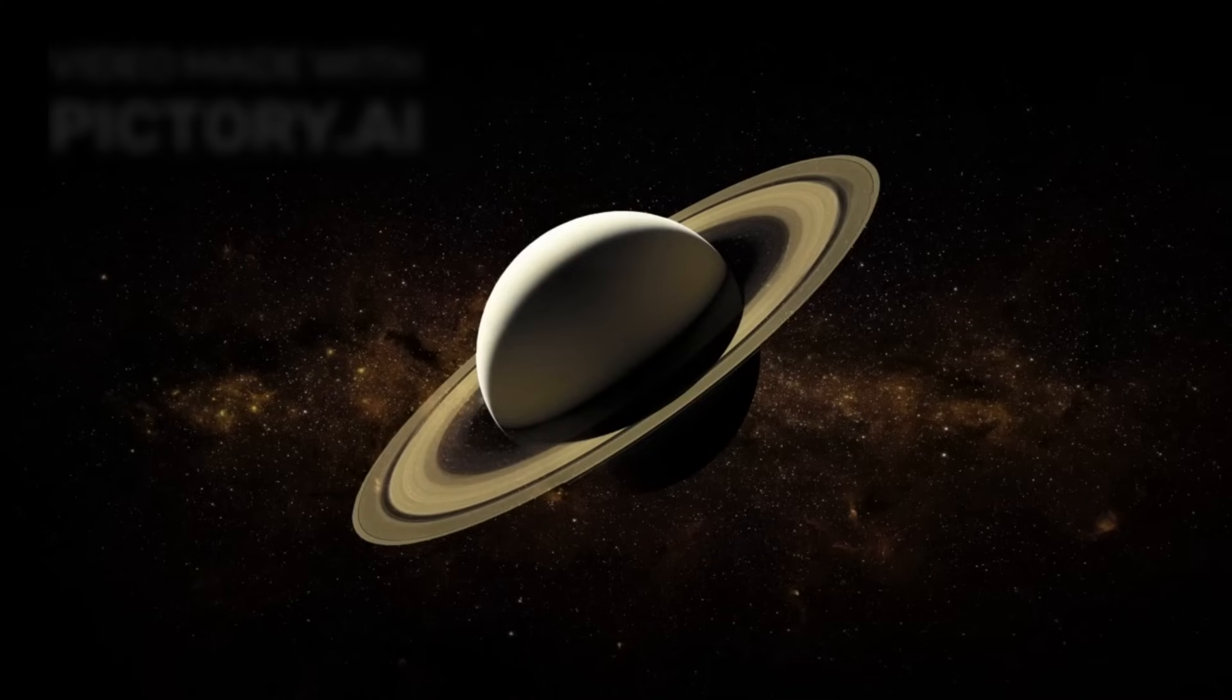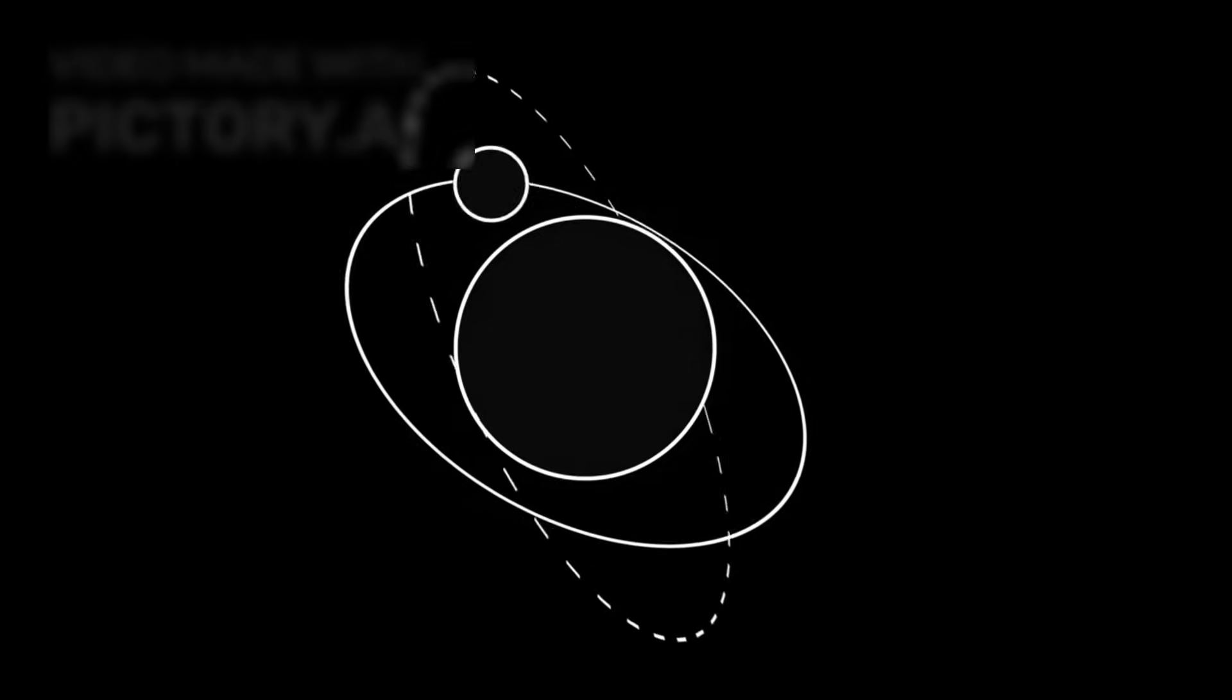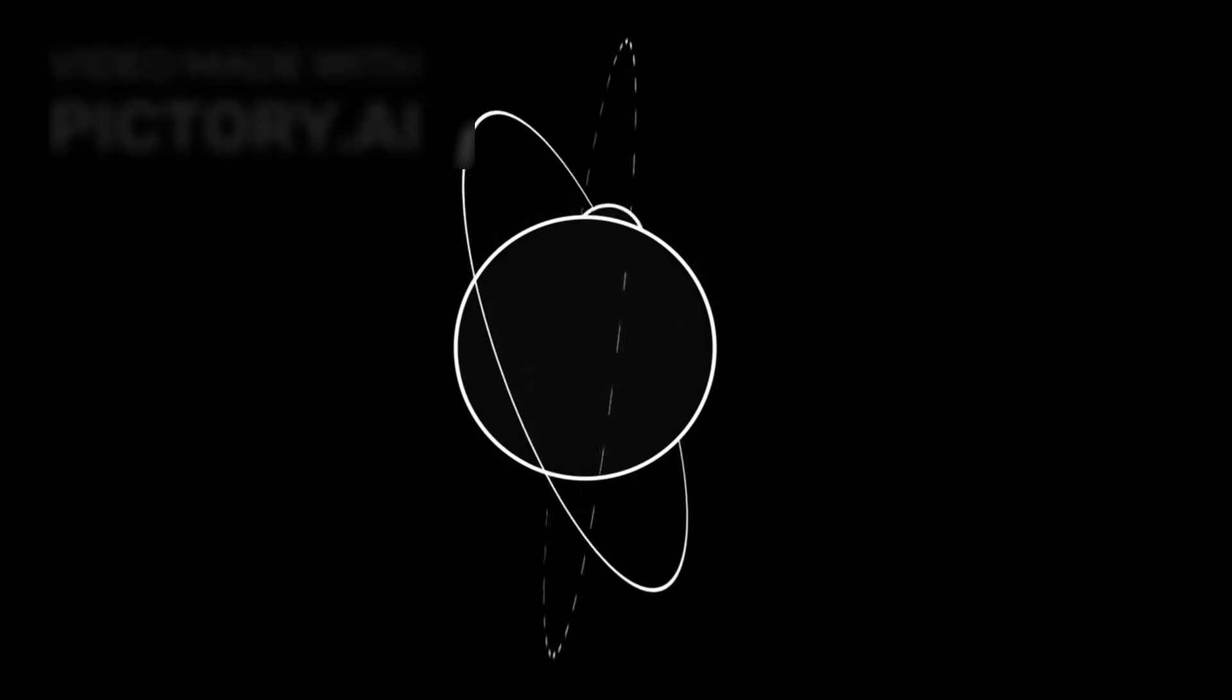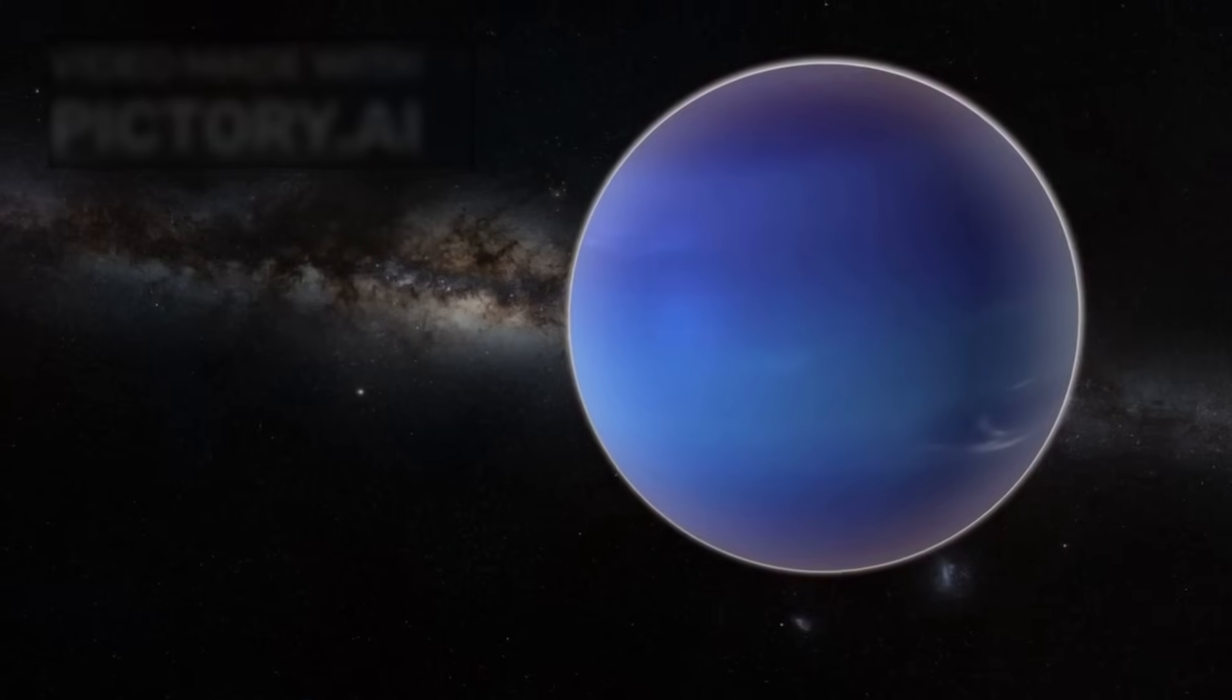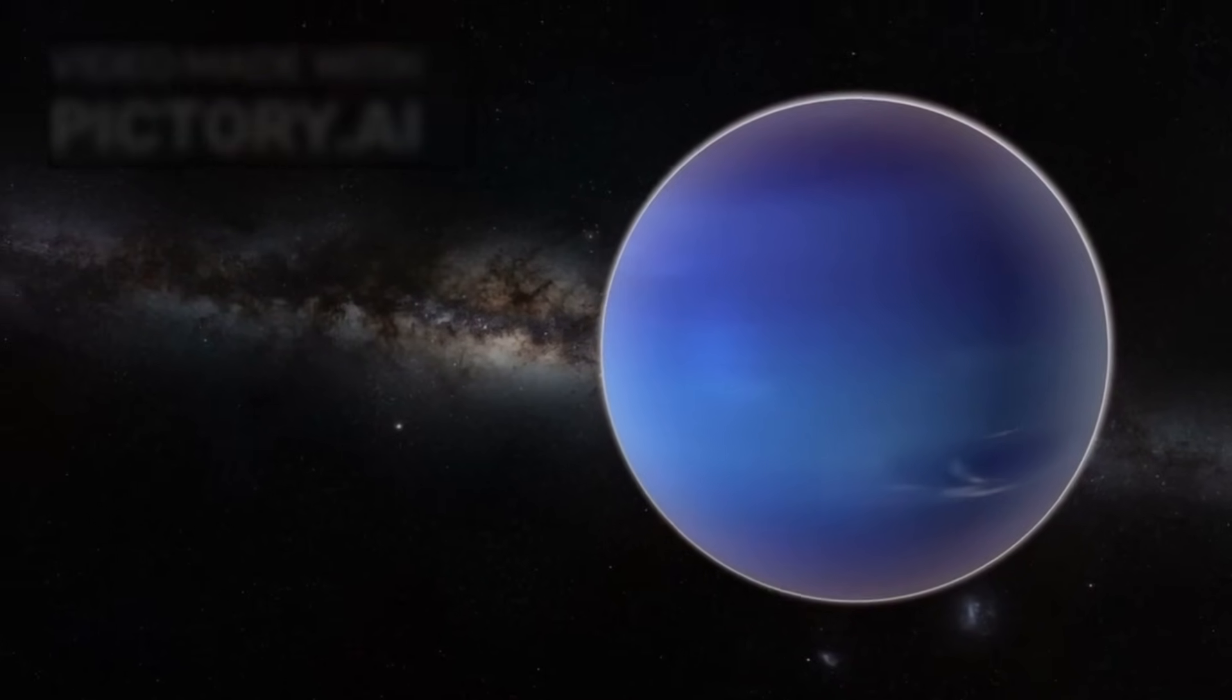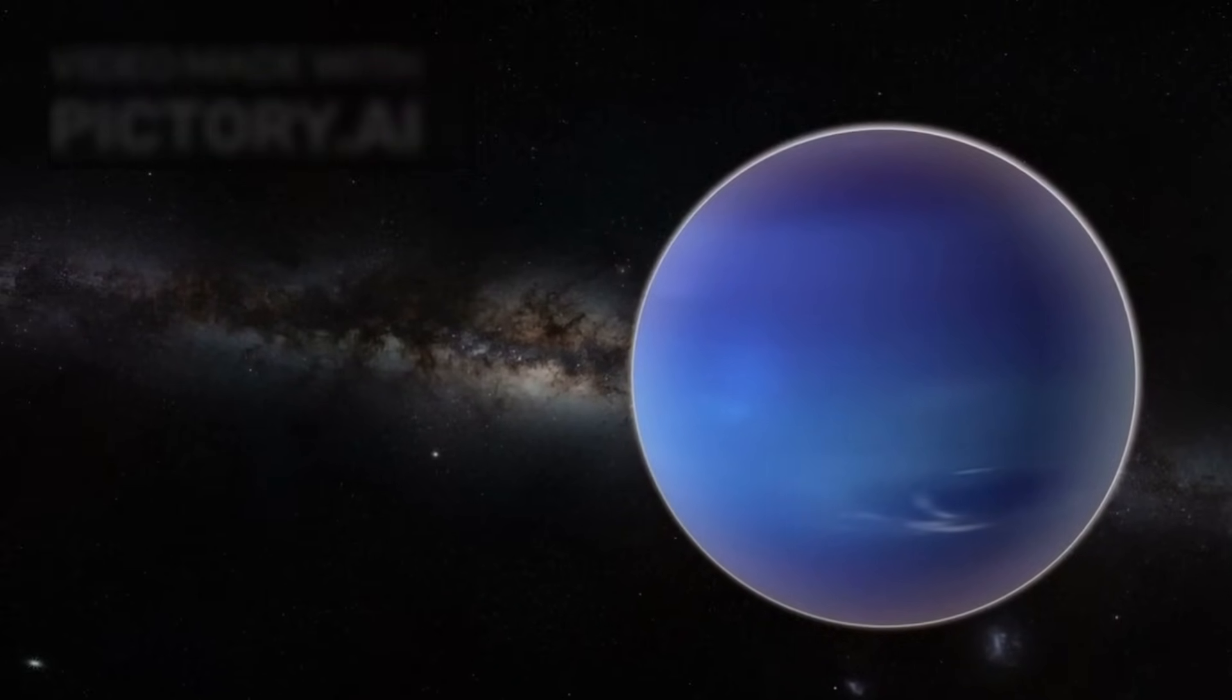Then came Saturn, where Voyager 1 sent back unprecedented views of the gas giant's rings and its enigmatic moon, Titan. Voyager 2 followed a slightly different trajectory. After its encounters with Jupiter and Saturn, it continued on to Uranus and Neptune, becoming the only spacecraft to visit these icy giants.